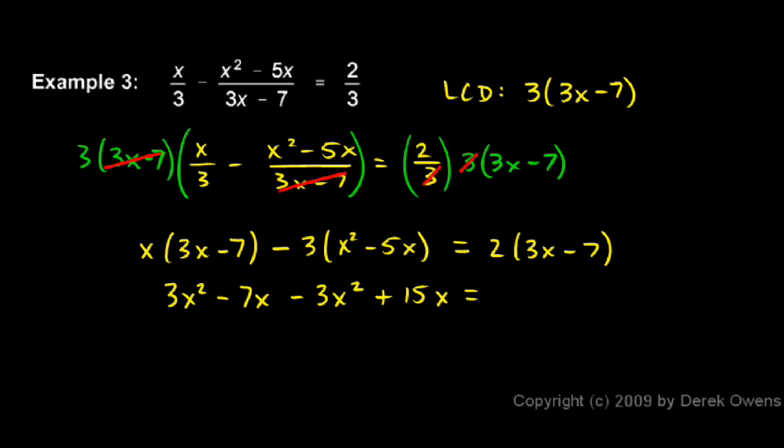And on the right side I distribute the 2, and that gives me a 6x minus 14. Now this is kind of nice. The 3x squared and the negative 3x squared cancel out. And that simplifies the equation a bit more.